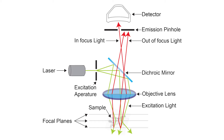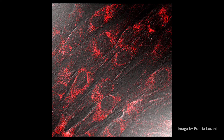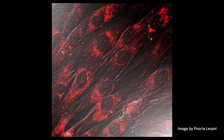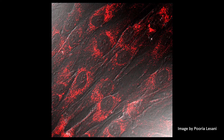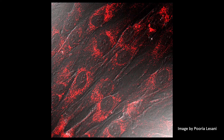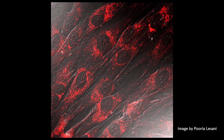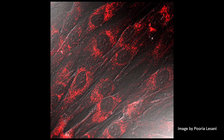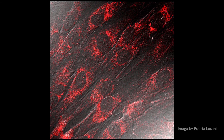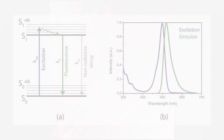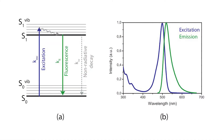It also has the ability to collect serial optical sections from thick specimens. For example, here you can see the beautiful fibroblast skin cells that I have captured using a fluorescence confocal microscope. Before we do the experiment for intracellular sensing ability of carbon quantum dots, let's look at the optical properties of our synthesized carbon quantum dots.